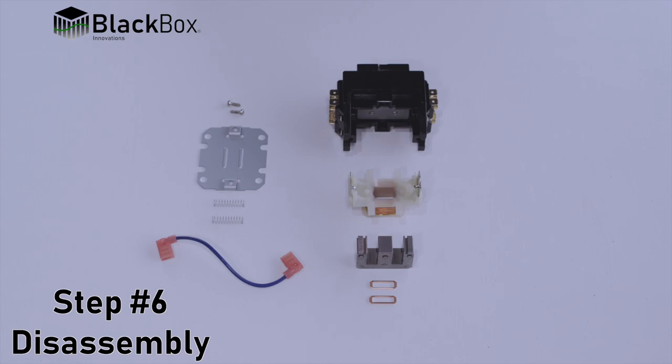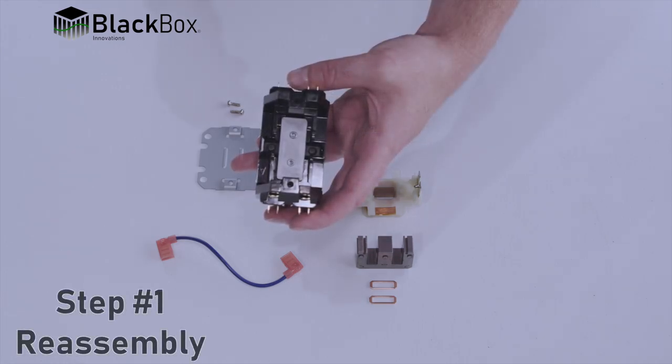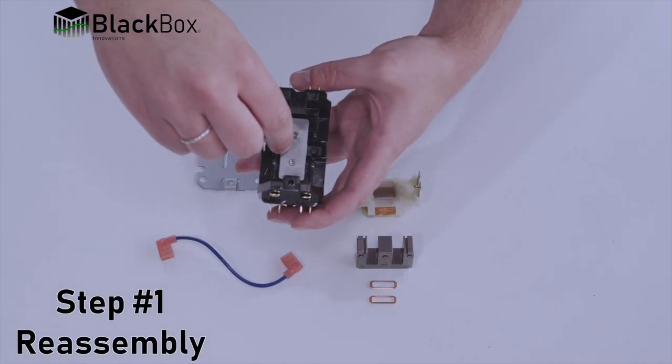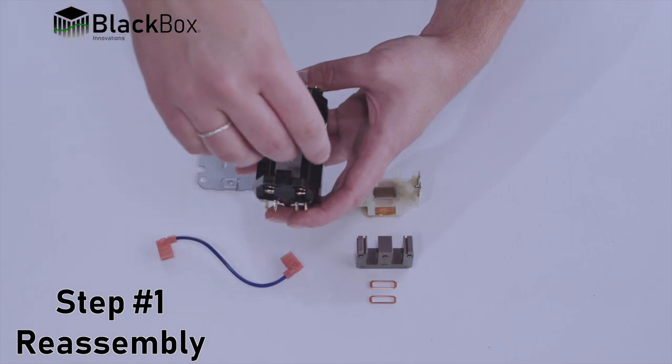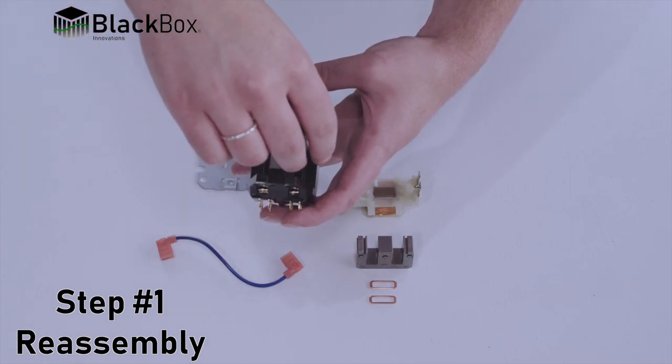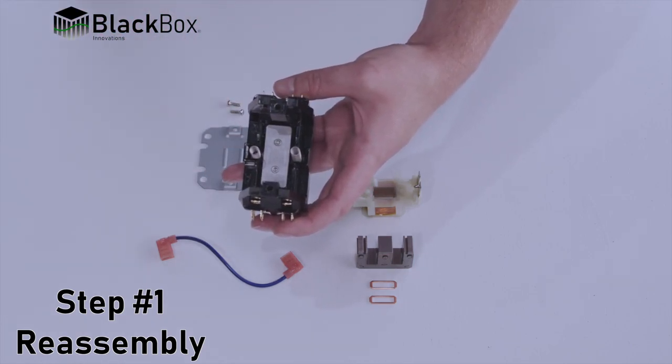To reassemble the contactor, please follow these nine steps. Step one, install both springs onto spring seats. Springs should be seated properly on both contactor assembly and electrical coil mating surfaces.